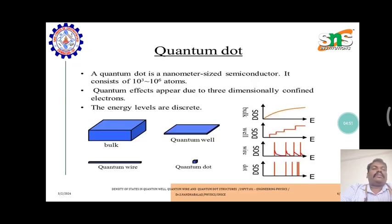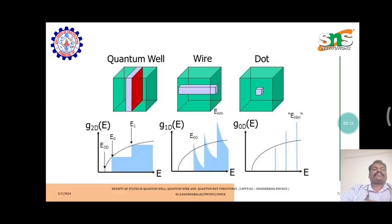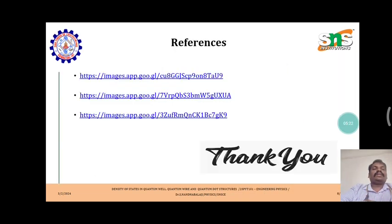A quantum dot is a nanometer sized semiconductor. It consists of 10 to the power of 3 to 10 to the power of 6 atoms. Quantum effects appear due to 3 dimensionally confined electrons. The energy levels are discrete. Quantum well materials, wire material, and dot material and the graphical approaches are shown in the figures.